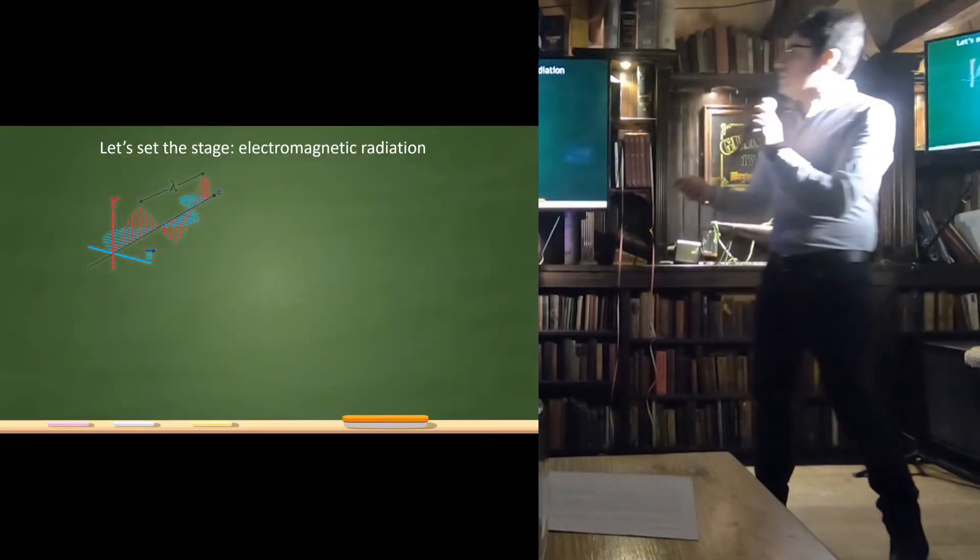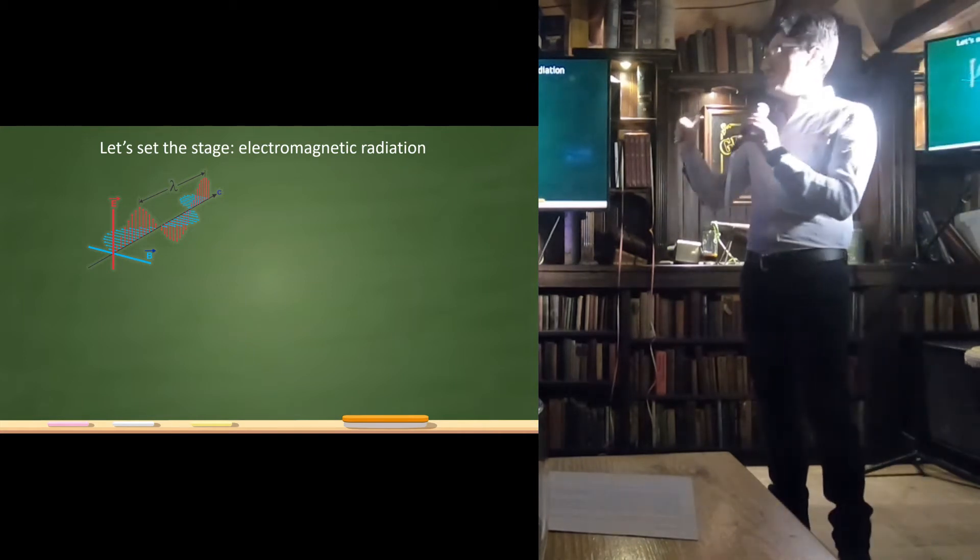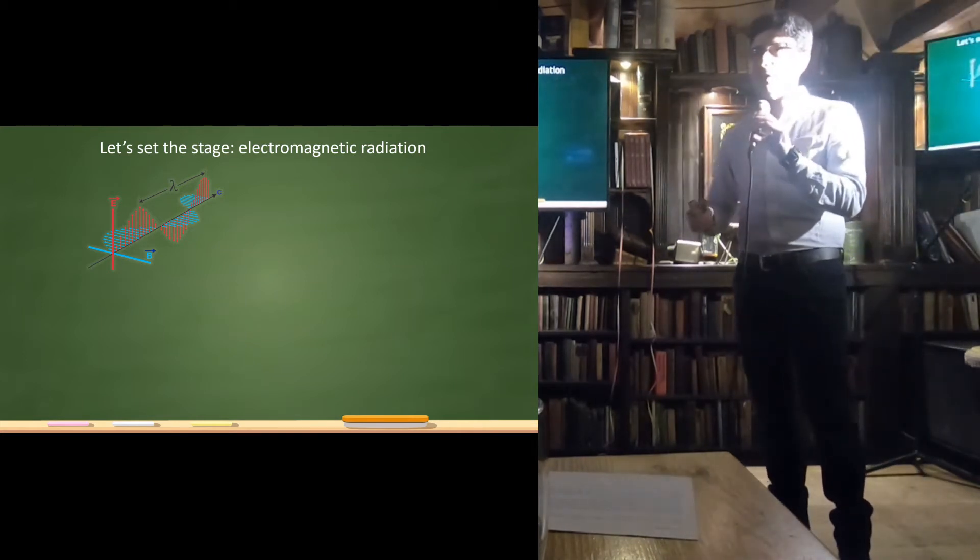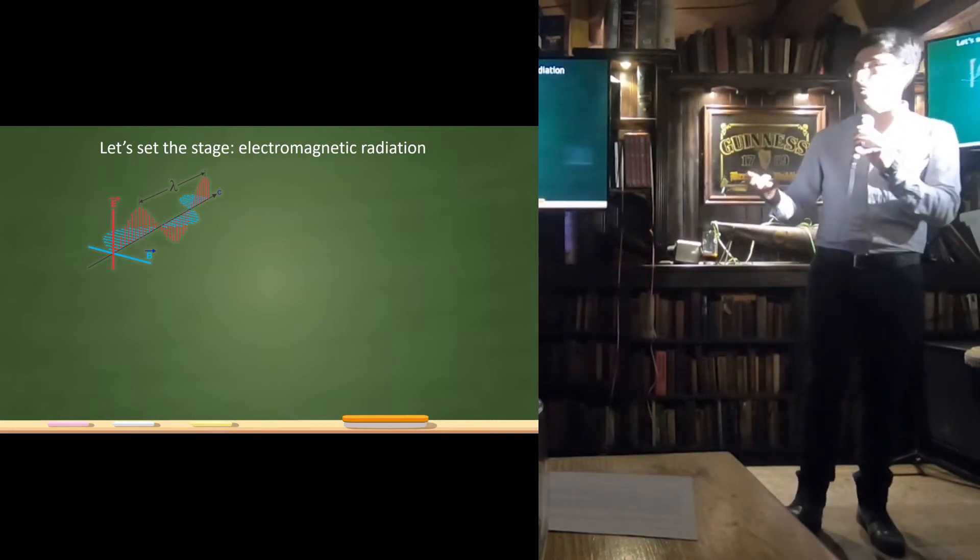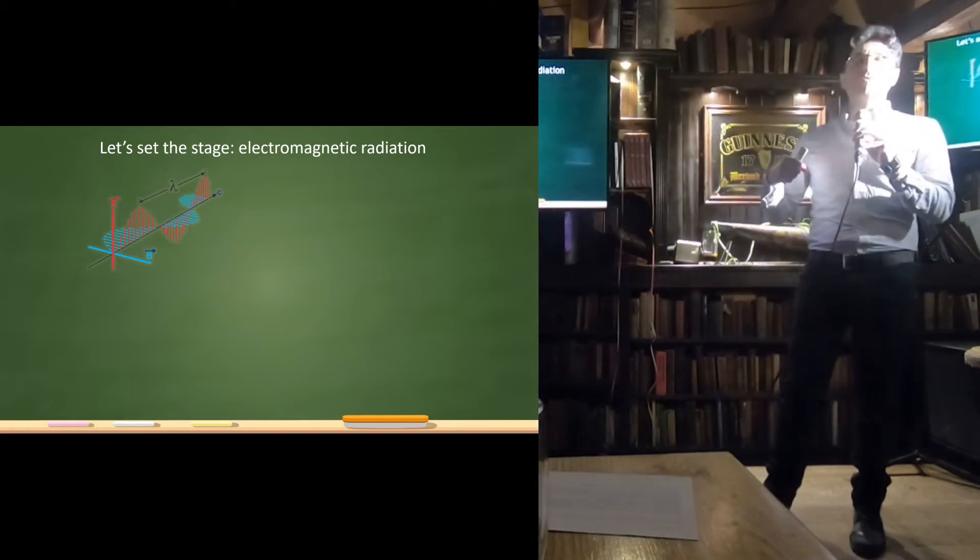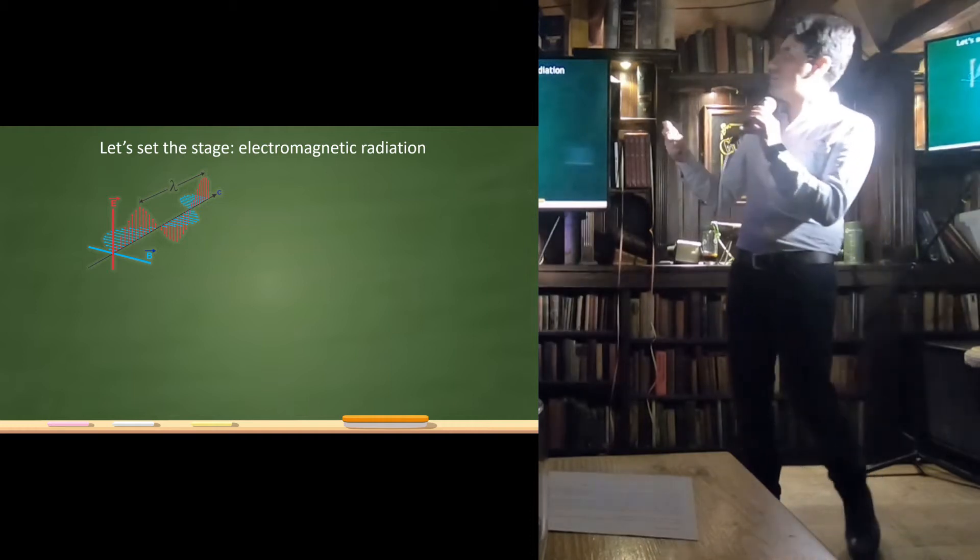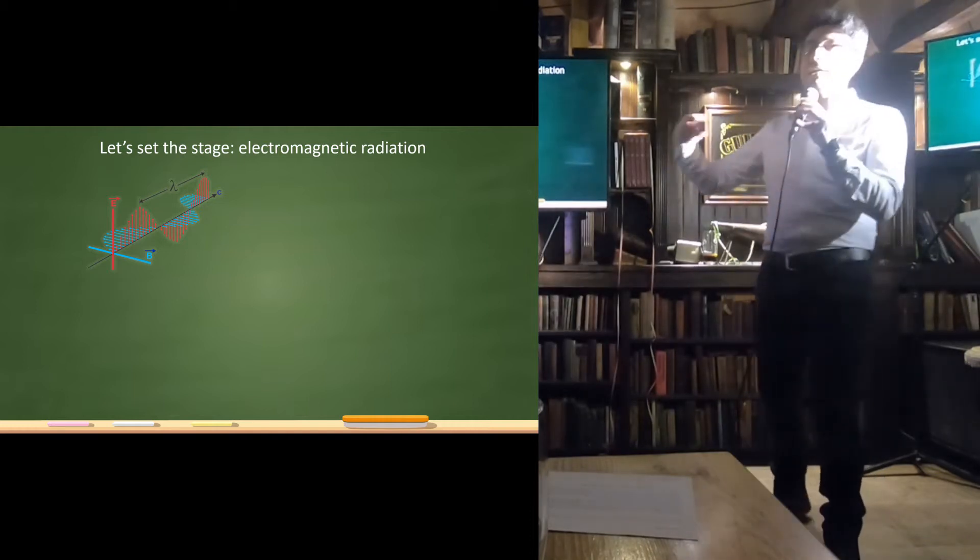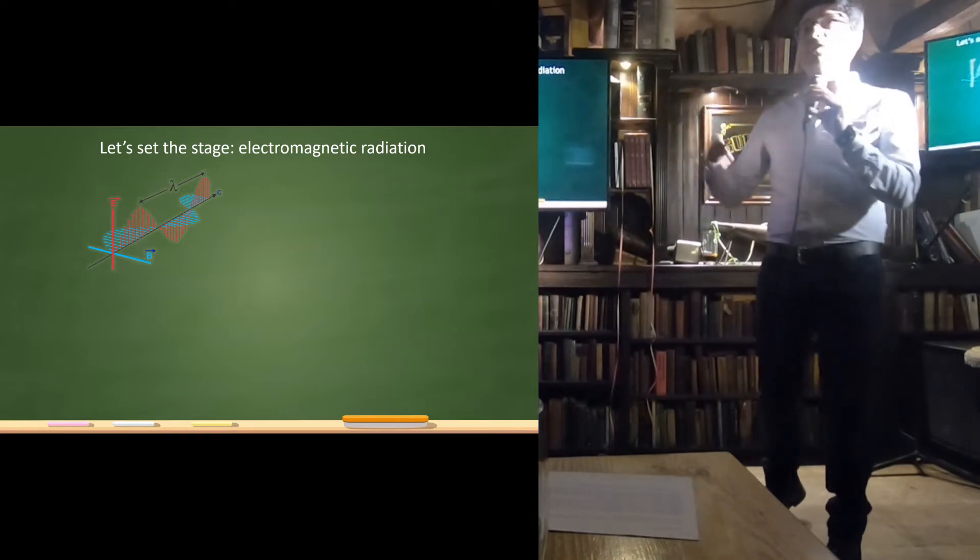Before starting with the amazing world of radio astronomy, I need just a very brief and quick introduction on some basic concepts that are essential to understand what I will be talking about. Radio astronomy deals with radio waves, and radio waves are electromagnetic waves. An electromagnetic wave consists just in an oscillation of a magnetic and electric field that is carrying energy in the space at the speed of light.